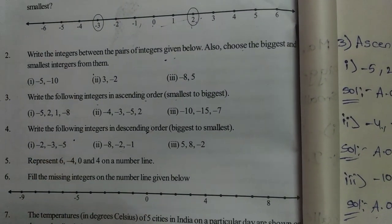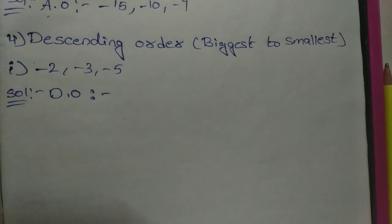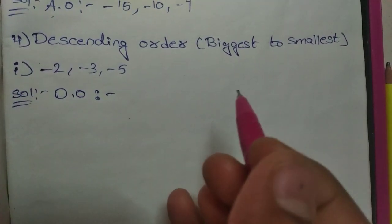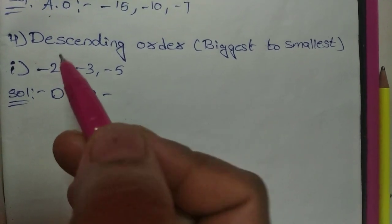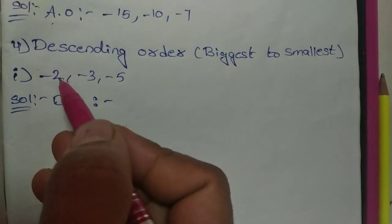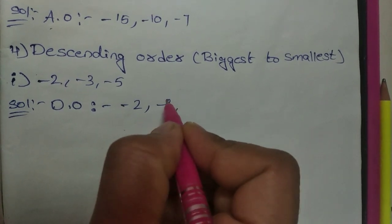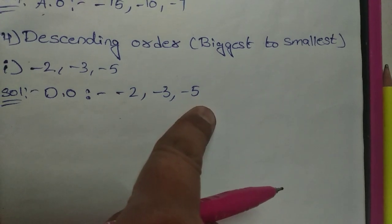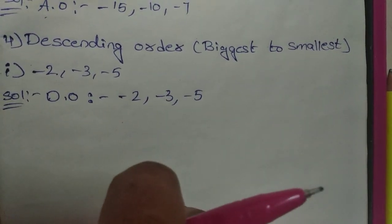First question for descending: minus two, minus three, minus five. Biggest to smallest — which one is the biggest? All three are negative integers. The one having the smallest digit with a negative sign is the biggest integer. So minus two is first, after that minus three, after that minus five.